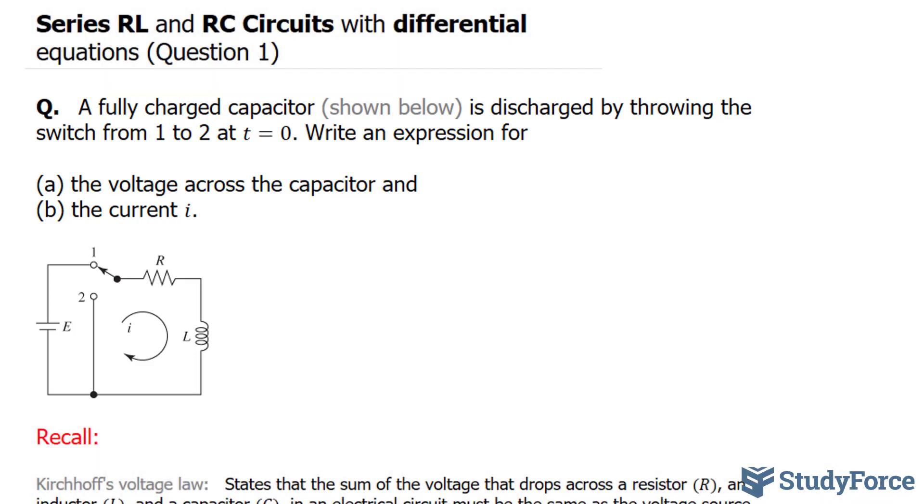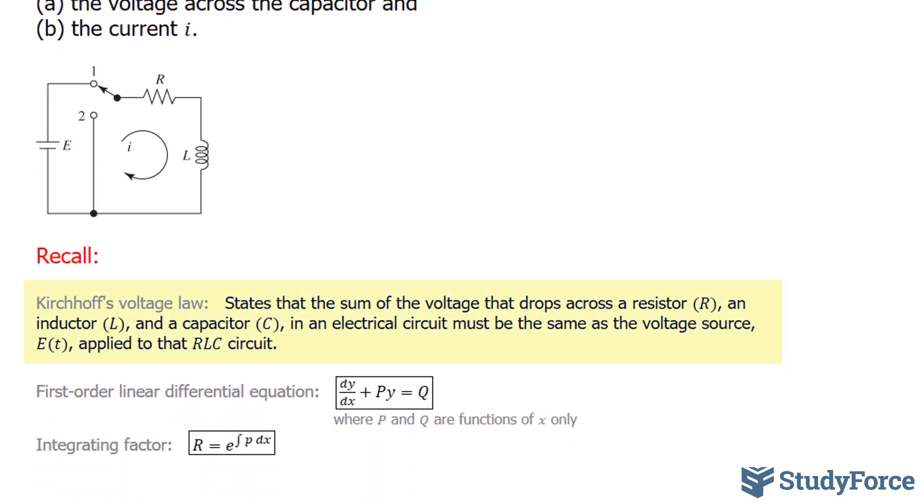To do such a problem, we'll need to know Kirchhoff's voltage law, which states that the sum of the voltage that drops across a resistor R, an inductor L, and a capacitor C in an electrical circuit must be the same as the voltage source E applied to the RLC circuit. So as the current is flowing in this direction, the voltage here and the voltage here will equal to our voltage source E. Let's write that down. We have voltage across a resistor plus voltage across an inductor, which I'll use the letter L, is equal to E.